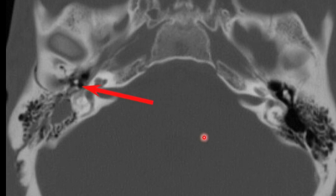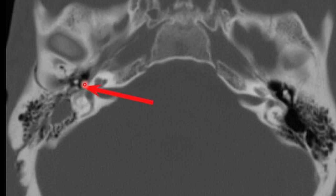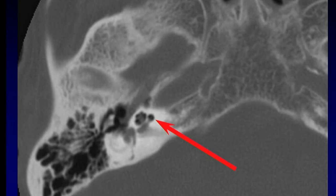Don't forget to look for ossicular dislocations in longitudinal fractures. This one is a nice obvious fracture where the ice cream is a millimeter or two off the cone. They're often much more subtle than this — just slight asymmetry, slight widening of the malleoincudal joint on one side or another. But I've shown you one that is a more clear case of ossicular disruption.